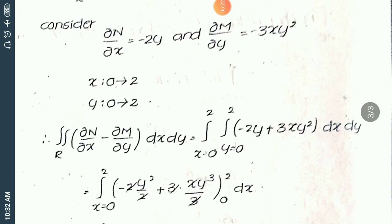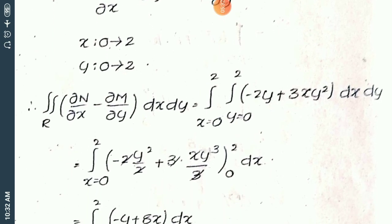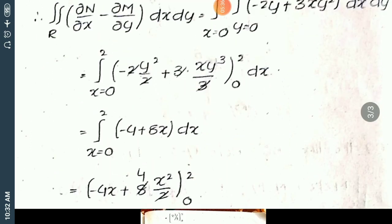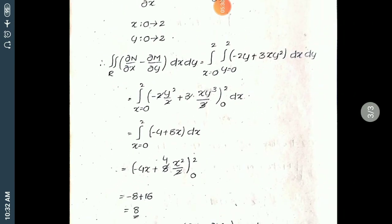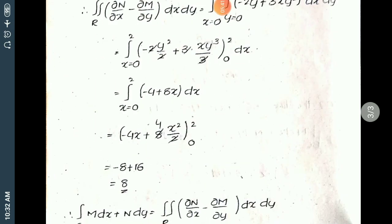Substituting these values into the right side double integral of (∂N/∂x − ∂M/∂y) dx dy, first integrate with respect to y and substitute limits, then with respect to x and substitute limits — the final answer is 8.